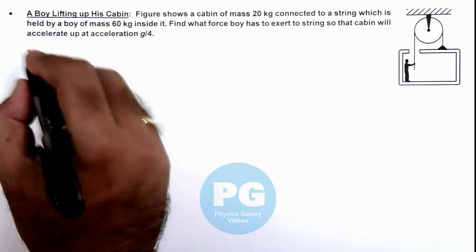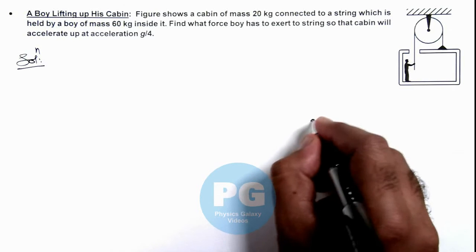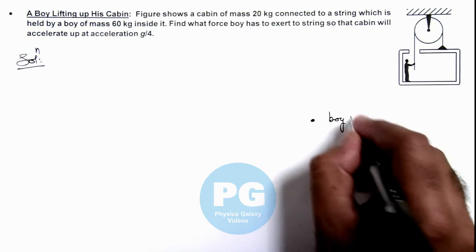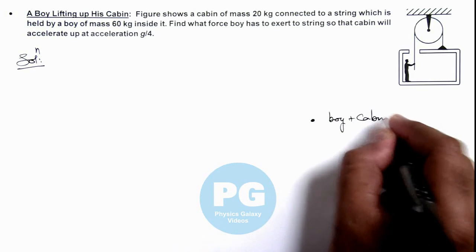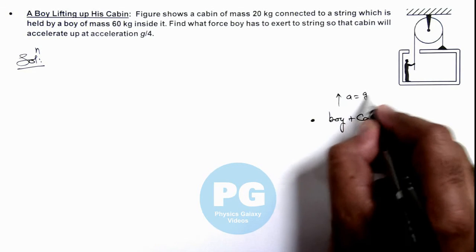Here in this situation we can directly draw the free body diagram of combined motion of the boy plus cabin, as we are given that the whole system is accelerating up with acceleration g by 4.